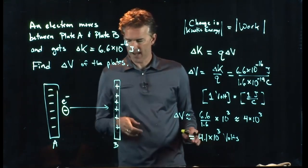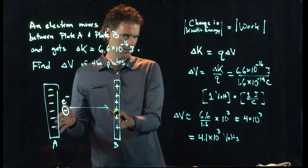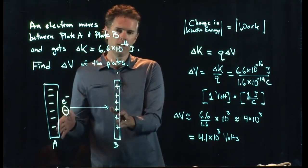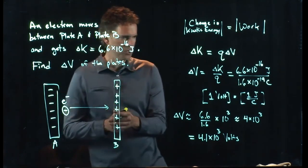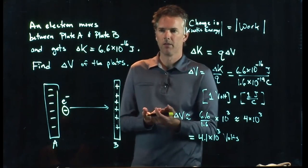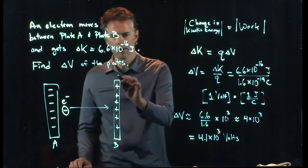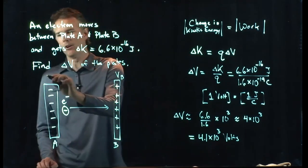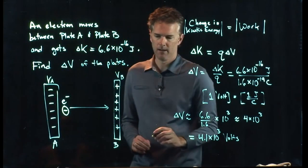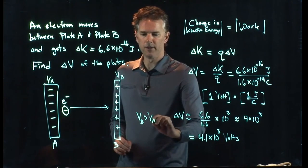The second part of that is related to the very first thing that we did. Which of these is at higher potential? The one that is at higher potential is the one with the positive charge. And so, the potential here at plate B is going to be bigger than the potential at plate A. VB is greater than VA.